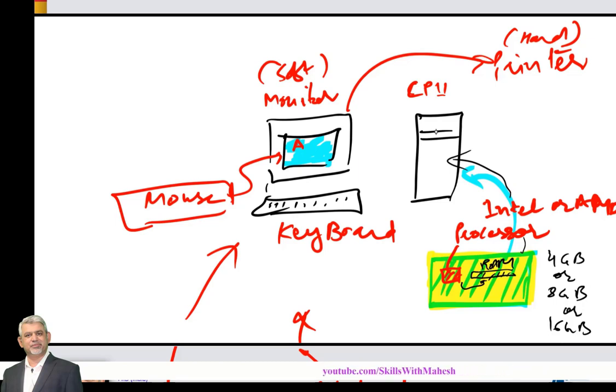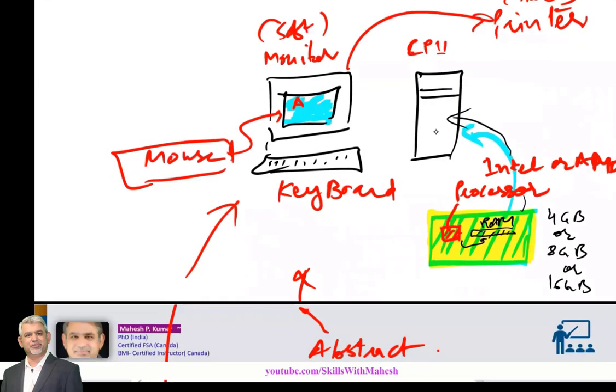Then this hard drive inside is also there. You are getting maybe one TB terabyte or two terabytes maximum. Hard drive is there where the data is permanently stored. This is also stuck on the motherboard.